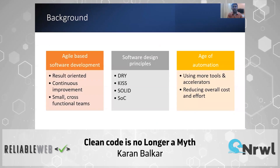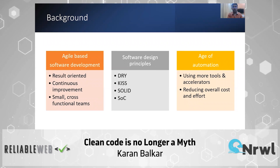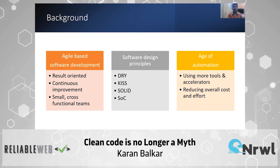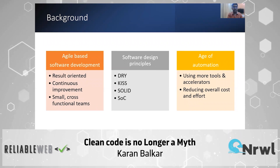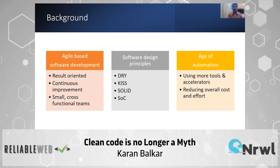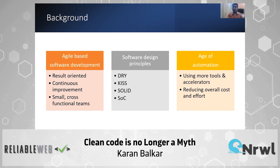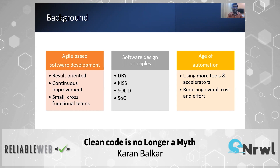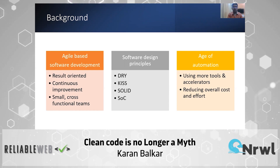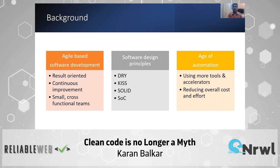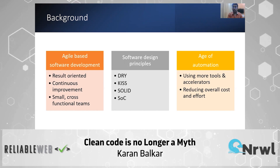Most of us are working in software projects which are agile in nature, which is mainly characterized by the fact that it is more result-oriented. It also helps us to achieve continuous improvement, and no longer are we working in silos — we are all part of small or medium-sized cross-functional teams.